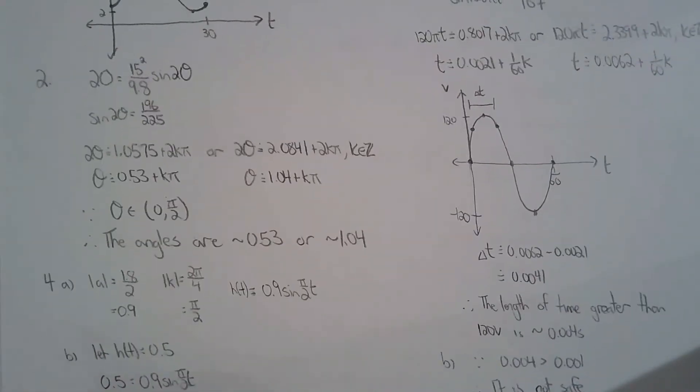For number two, you're basically shooting a cannonball. The speed is 15 meters per second, the gravity is 9.8 meters per second squared, and the range is 15 meters. Sub them all in and solve for theta.